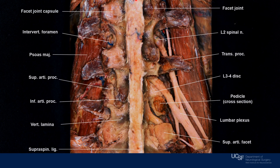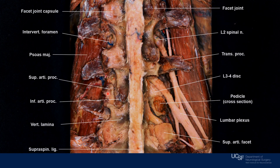This is a posterior view, superior to inferior, medial to lateral, left side and right side. We see the facet joint capsule. We observe the superior articular process matching the inferior articular process of the superior vertebra, the vertebral lamina.